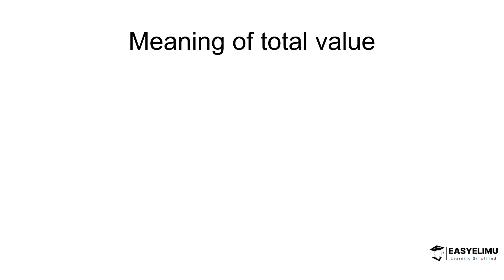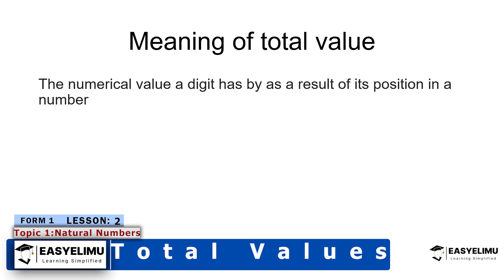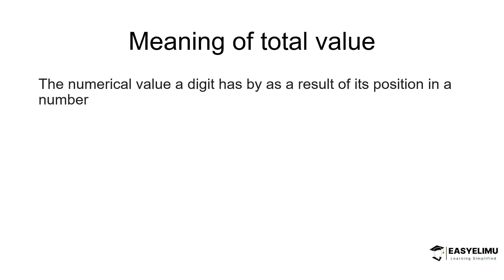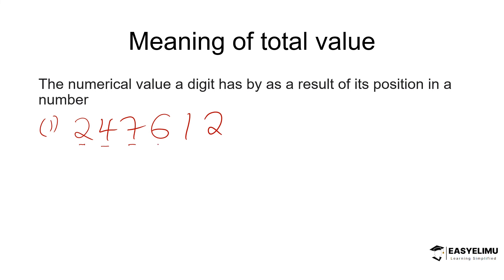So what does it mean when you talk about the total value of a digit in a given number? Basically, this simply means the numerical value a digit has as a result of its position within a given number. So you can have a number like 247612 — this number has different digits: 2, 4, 7, 6, 1, and 2. Each of these digits is supposed to have a different total value, and the total value of a digit depends on its position.